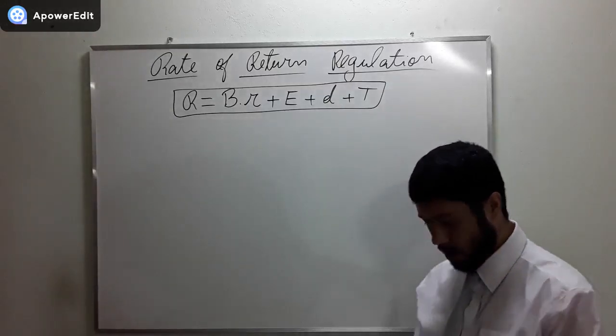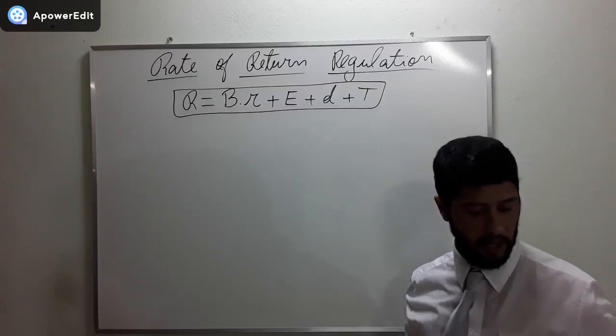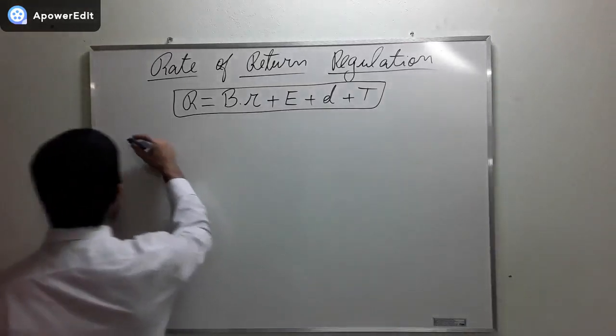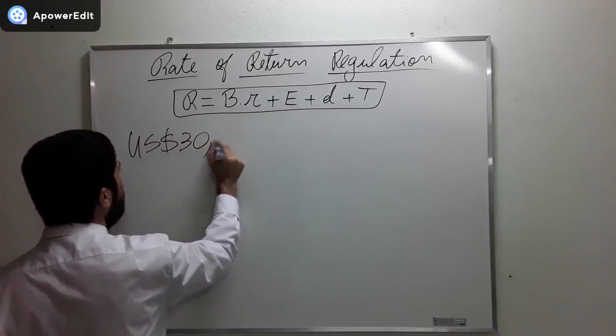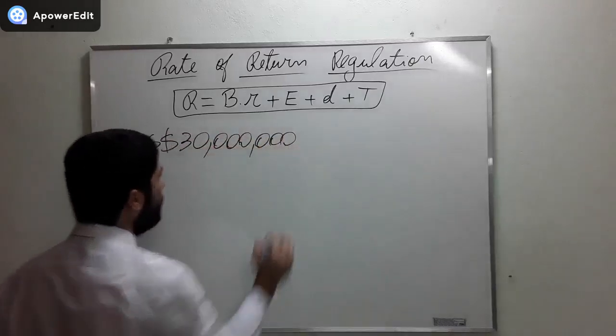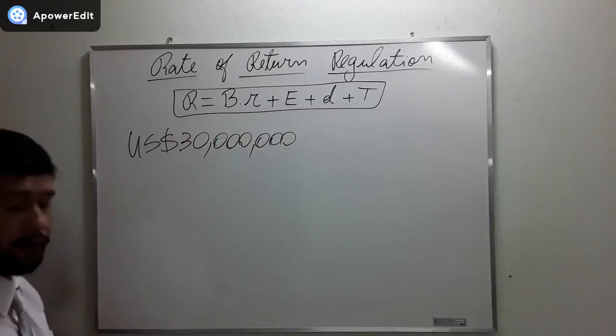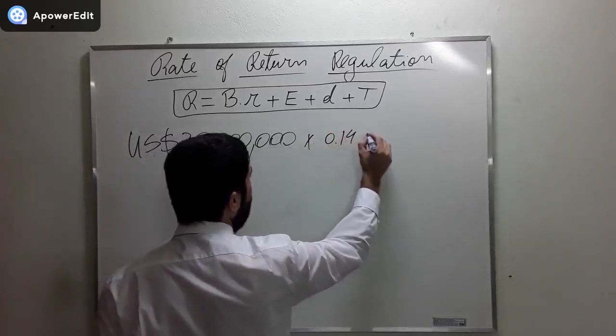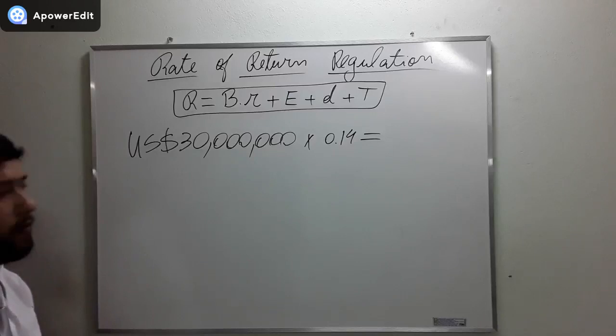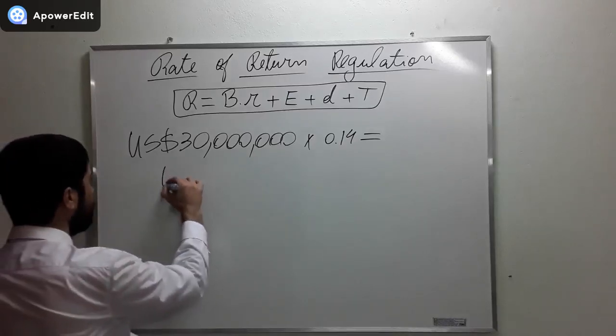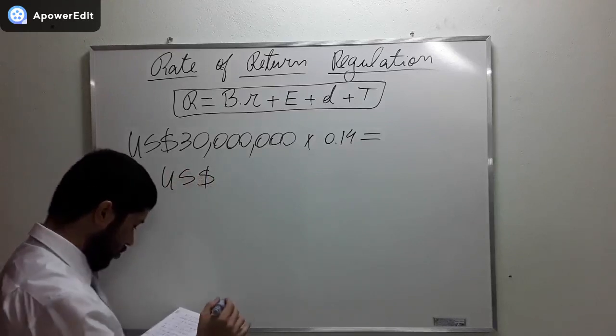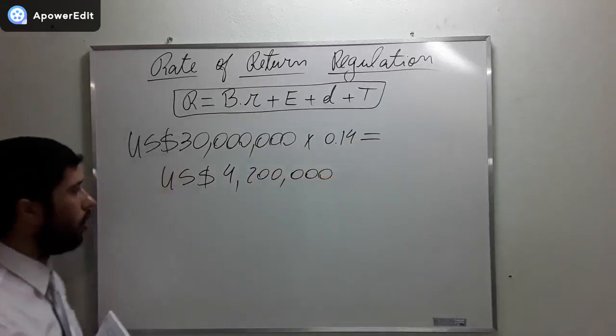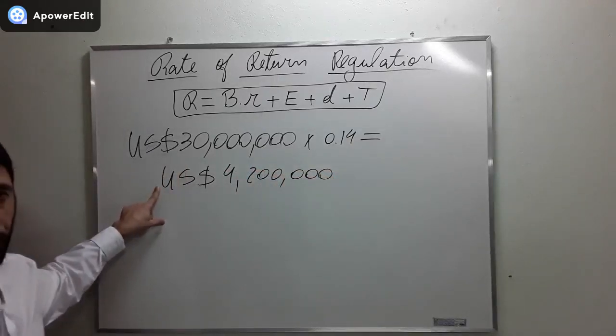The cost of equity is 14% of the rate base. If the rate base in American dollars is $30 million, and the cost of equity is 14%, then we multiply by 0.14, and 0.14 times $30 million is going to give $4.2 million USD.